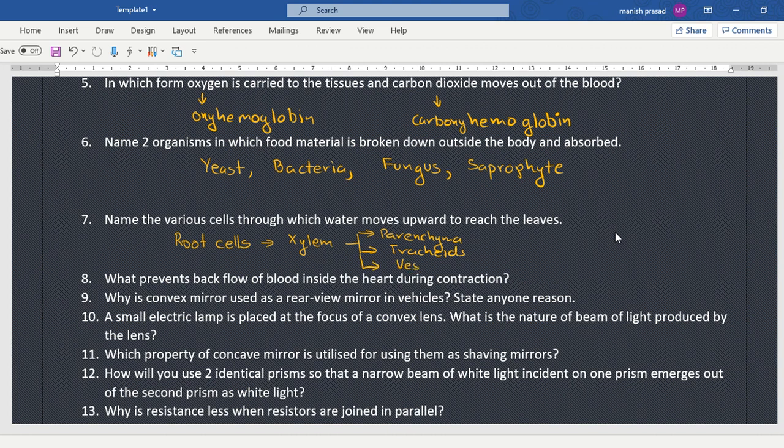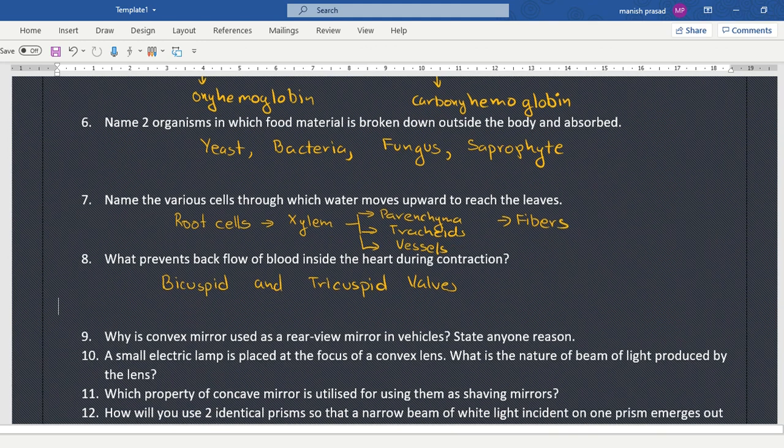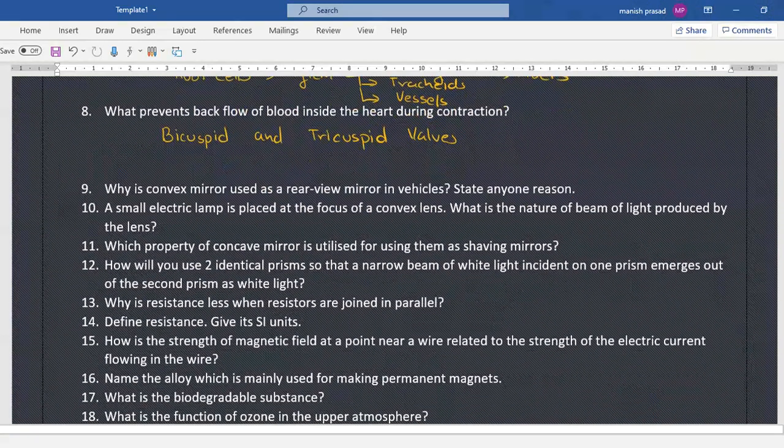Take it. Fibers. Okay. Now what prevents the backflow of blood inside the heart during contraction? Can anyone name the valve? Book mein naam nahi diya hai lekin. Yes. Bicuspid and tricuspid valves. But if you do not know the names, in the book the names I think so it's not given. Diagram mein diya hoga. Okay, so you can just mention the valves.